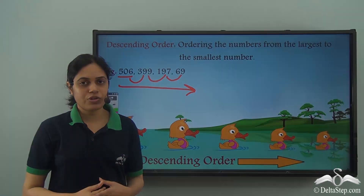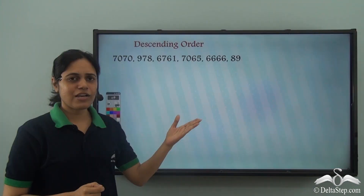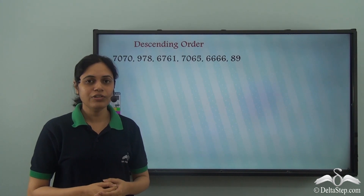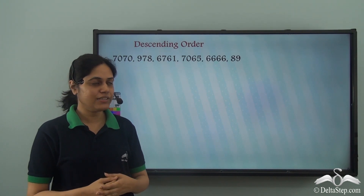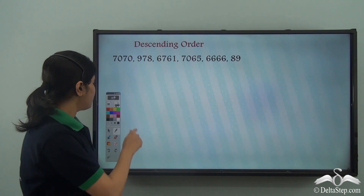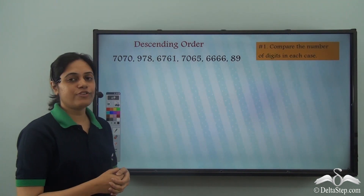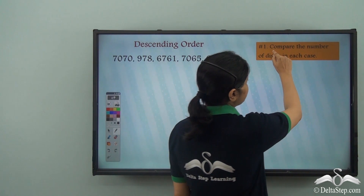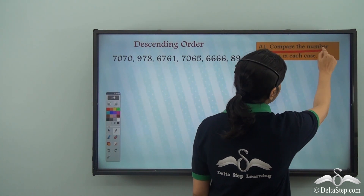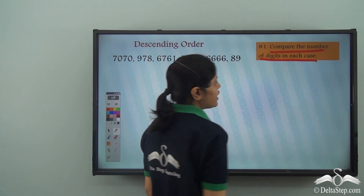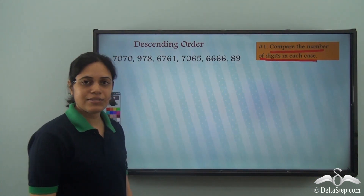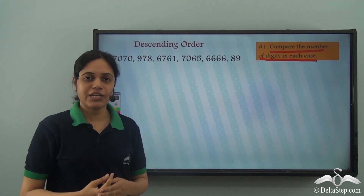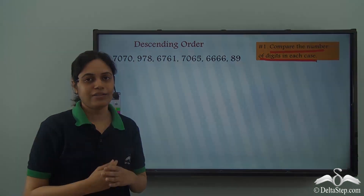Let's use those tricks. So let us now arrange these numbers in descending order using the tricks which we had learned. What was the first trick or the first rule? The first rule is that we need to compare the number of digits in each case, so let us find the number of digits in each number and compare them.